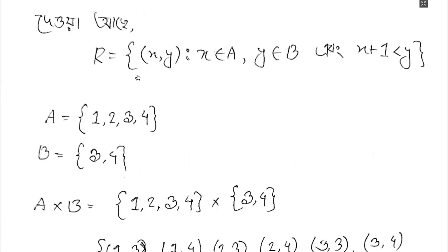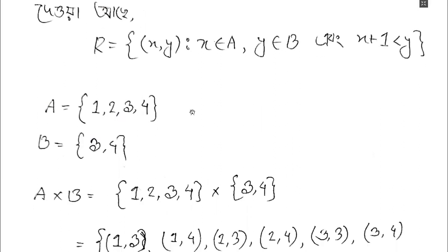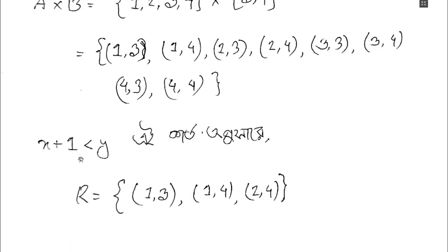Remember how to solve this: x is the first element and y is the second. For (1,3): 1+1=2, which is less than 3 — valid. For (1,4): 1+1=2, less than 4 — valid. For (2,3): 2+1=3, not less than 3 — not valid. For (2,4): 2+1=3, less than 4 — valid.